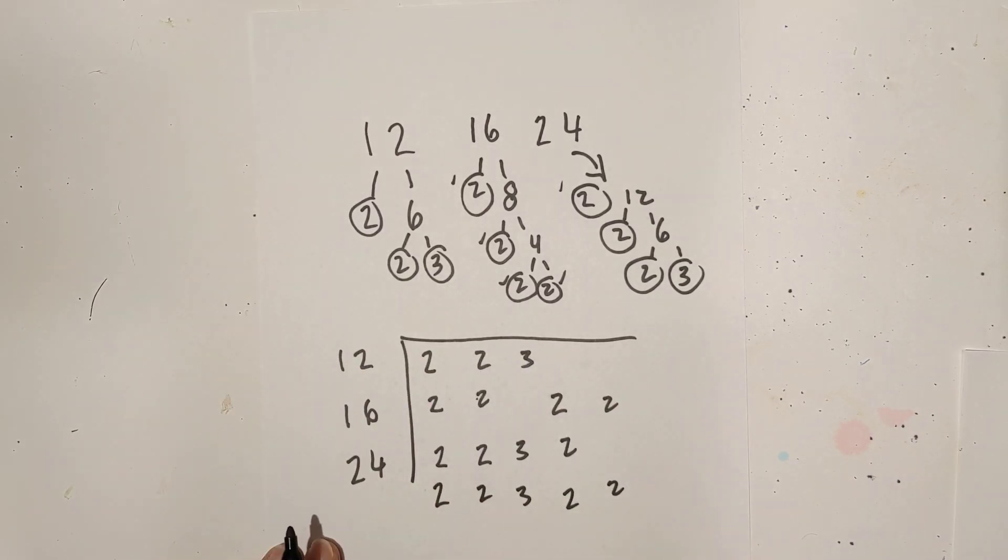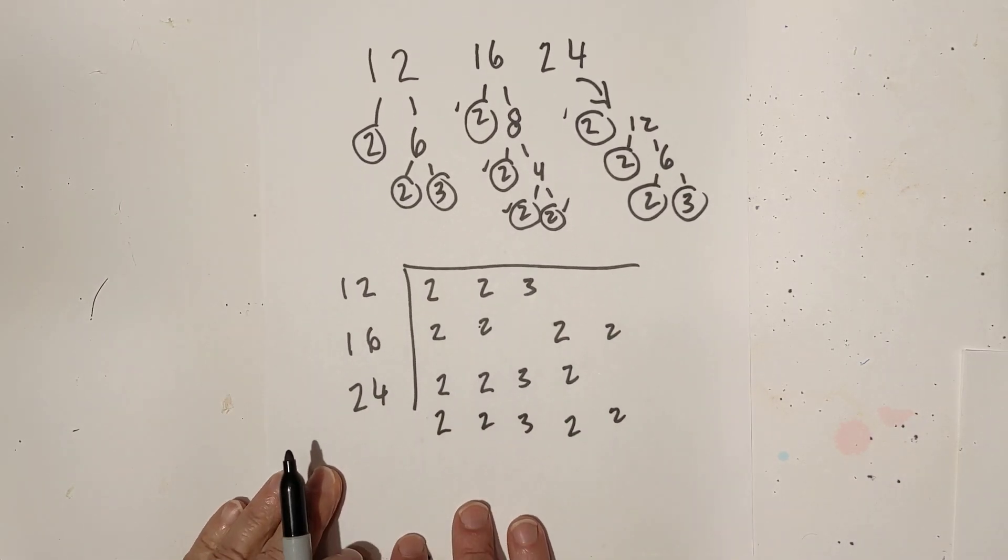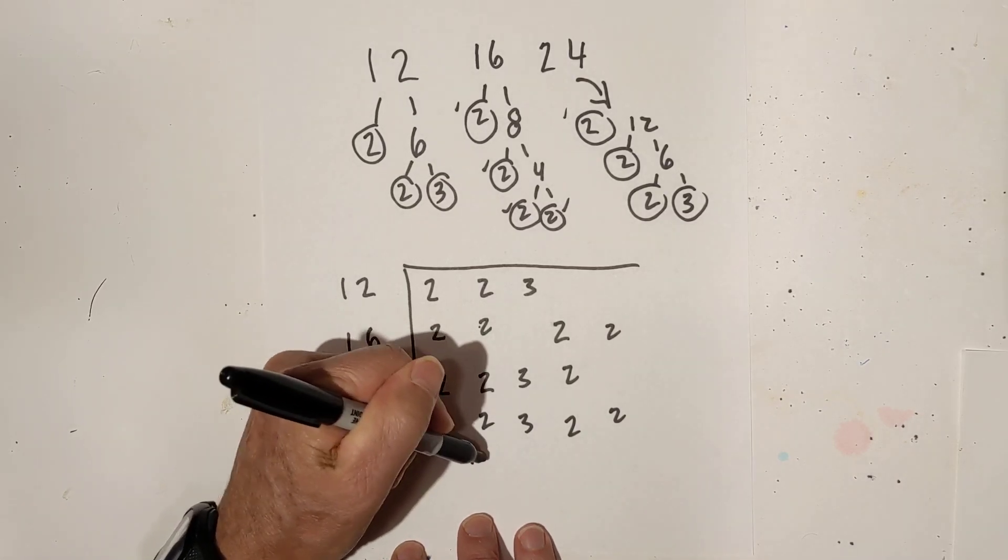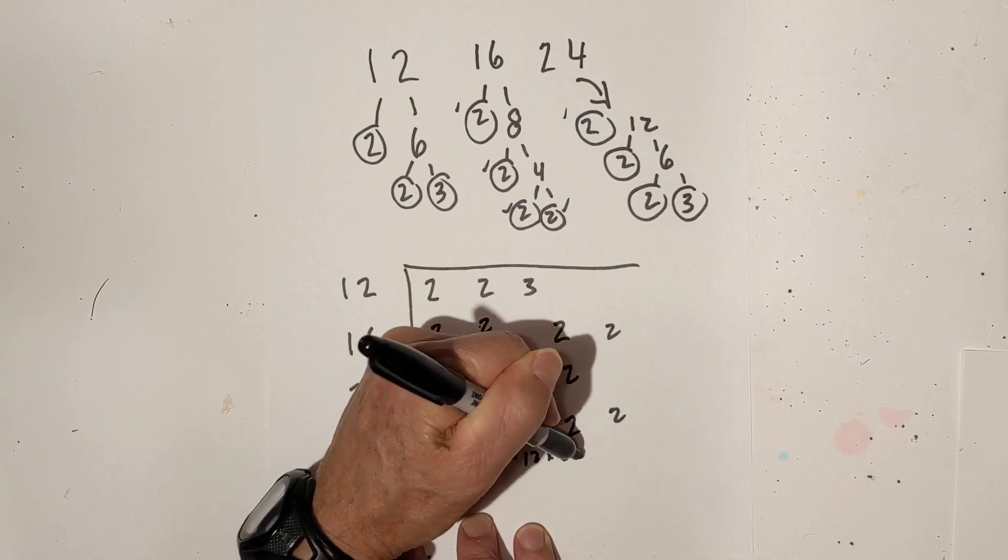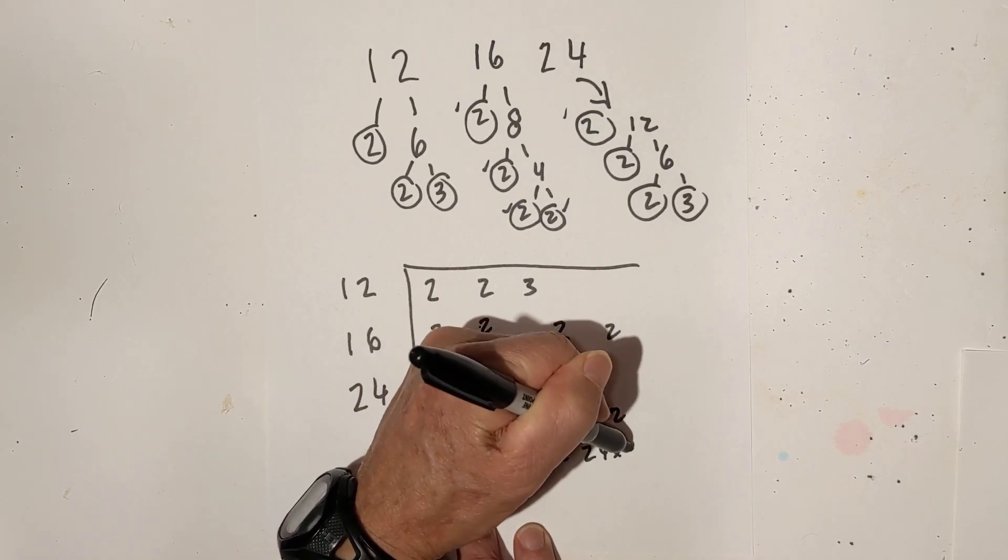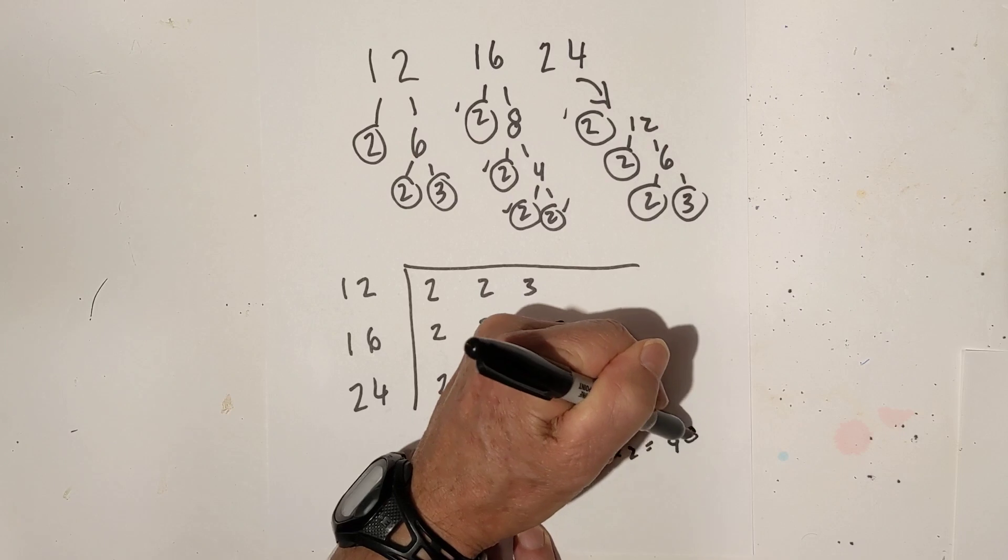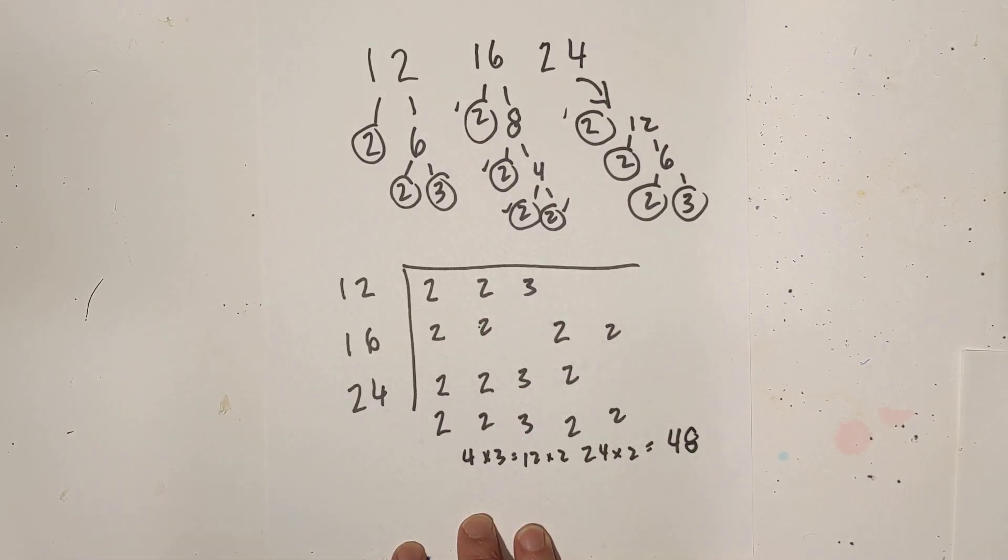And then all you do is multiply this together. Let me move it up just a little bit. There's 4 times 3 is 12 times 2 is 24 times 2 equals 48. Okay, so that is the prime factorization of 12, 16, and 24.